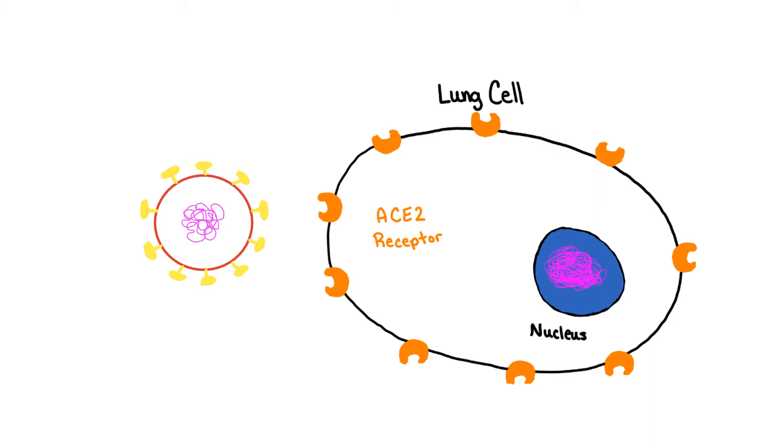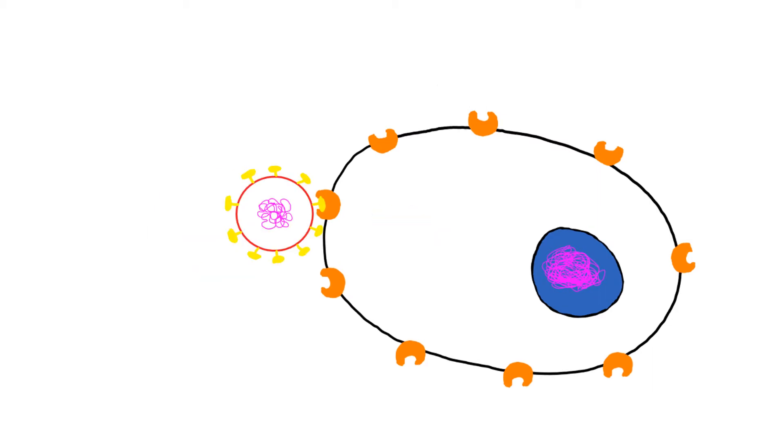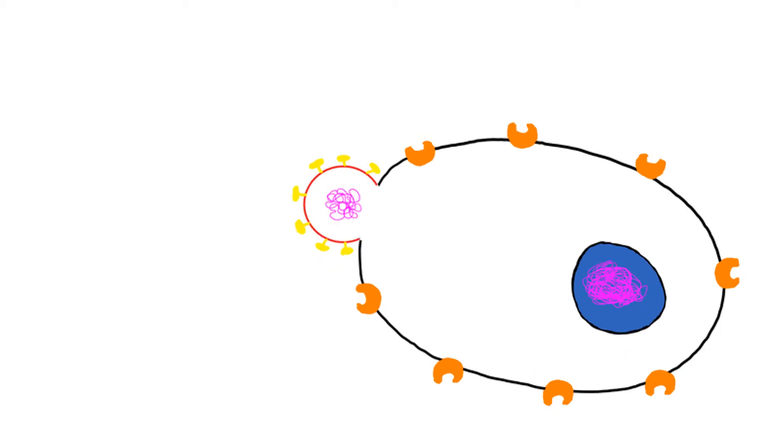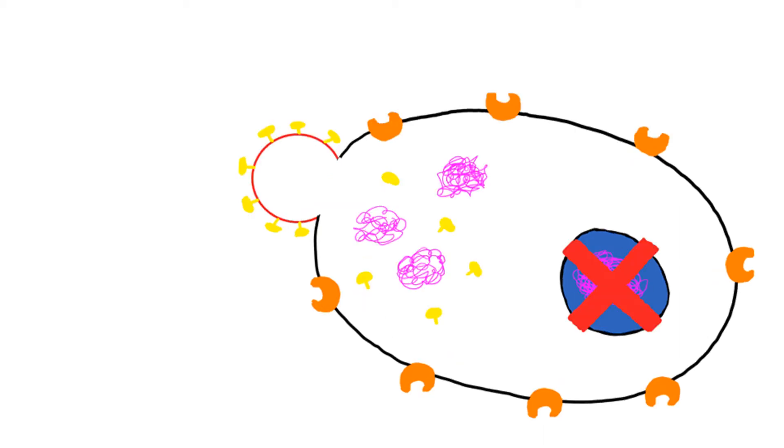Once in the lungs, the spike proteins reach out and attach to proteins on our cells named ACE2 receptors. The interaction between the spike proteins and the ACE2 receptors initiates the fusion of the viral particle with our cells. Once joined together, the virus uses its chemical machinery to hijack our cells. The virus inserts its genome into the cell, which is the set of instructions used to make copies of itself.